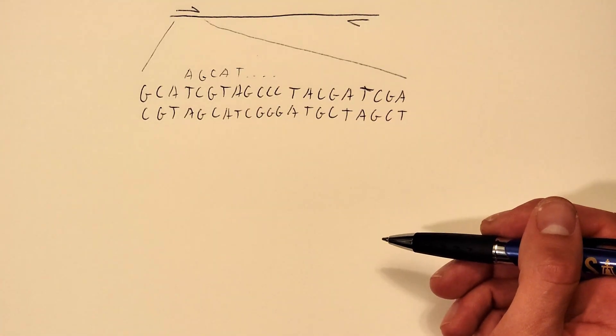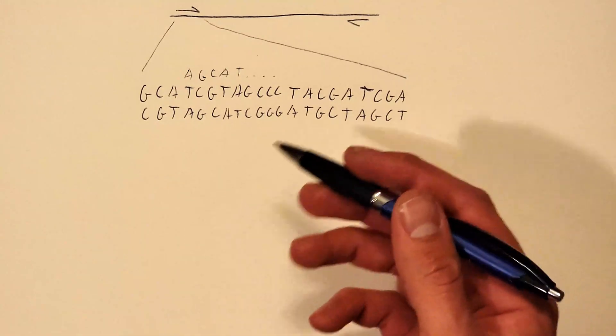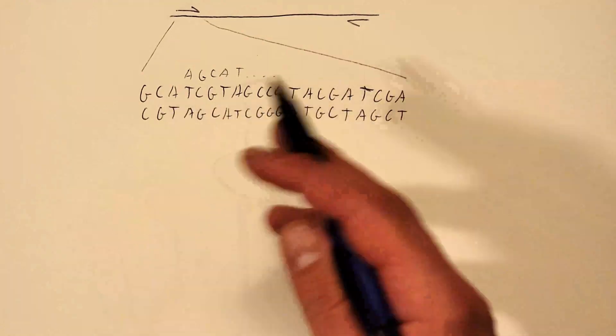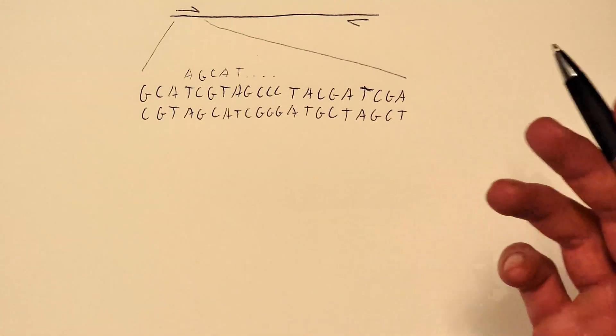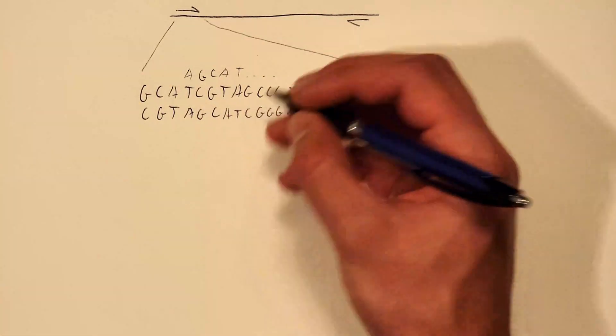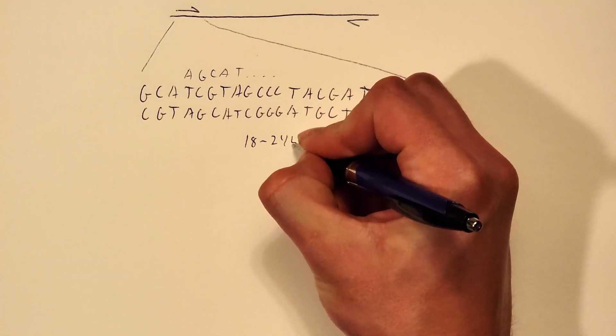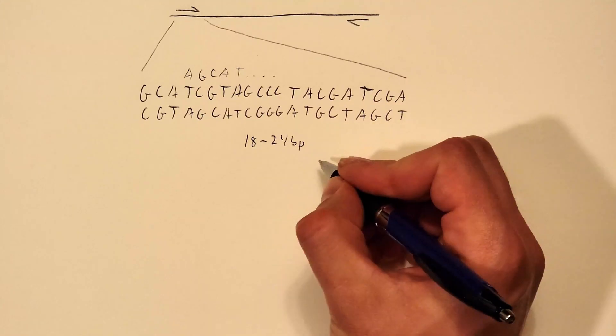Here are some rules that you should be thinking about when you're designing your primer. And sometimes all of these rules you can't exactly follow all of them perfectly when you're designing primers but you want to get as close as possible to 18 to 24 base pairs in length. This is optimal.